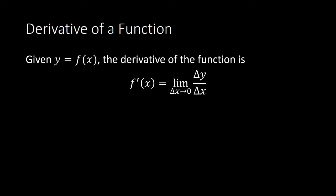The derivative of the function is f prime of x, equal to the limit of the change in y over change in x as delta x approaches 0. As our second line approaches the tangent line, the slope of our second line — which is just change in y over change in x — approaches the slope of the tangent line. This is where we ended last time.